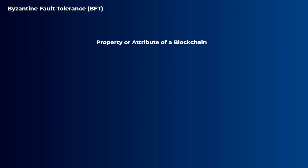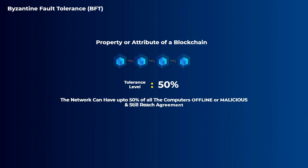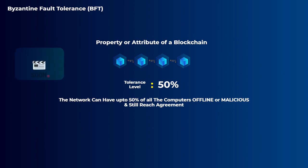But the Byzantine fault tolerance, on the other hand, is a property or an attribute of a blockchain or a network — meaning how many malicious or offline computers the network can have and still reach agreement. We will actually make a video on the practical Byzantine fault tolerance mechanism and how it works, as it is pretty confusing.